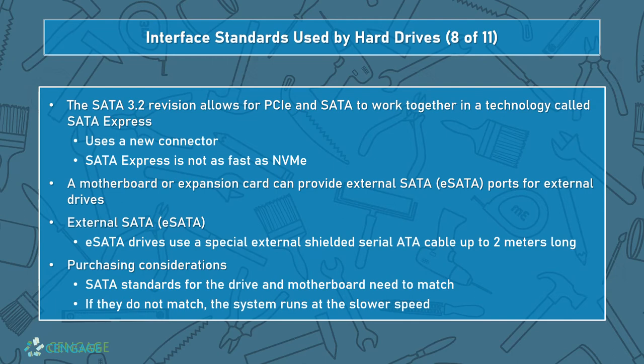SATA 3.2 allows PCI Express and SATA to work together in a technology called SATA Express, which provides additional speeds and can enhance hybrid drives. We can also provide eSATA ports — external SATA — for external drives using a special external shielded cable up to two meters long, shielded because it's outside the case and more prone to interference. When purchasing a SATA drive, make sure the standards match the motherboard; if they don't match, the system will run at the slower of the two speeds. If needed, a controller card via PCI Express can allow access to SATA 3 functions on an older motherboard.